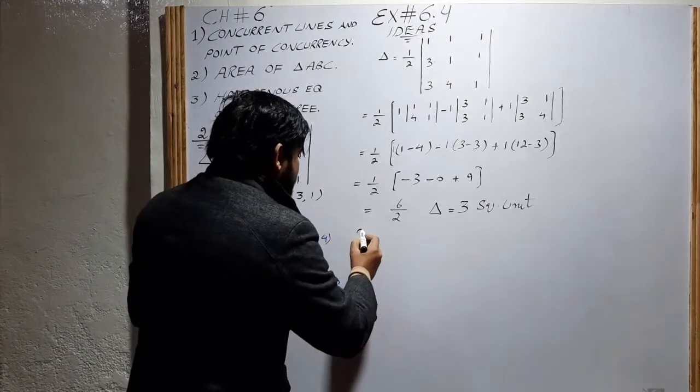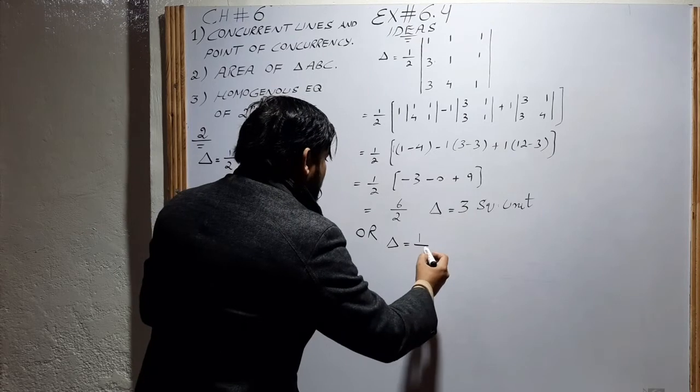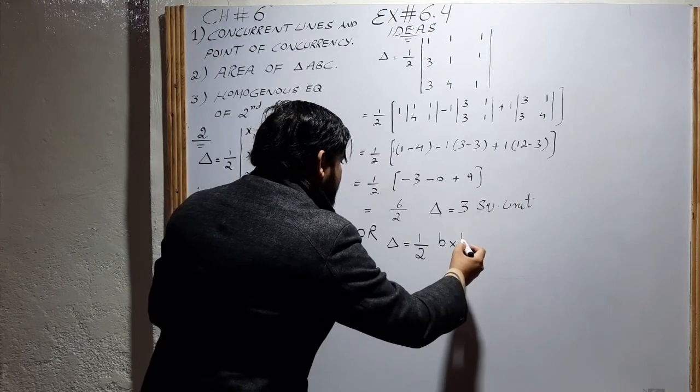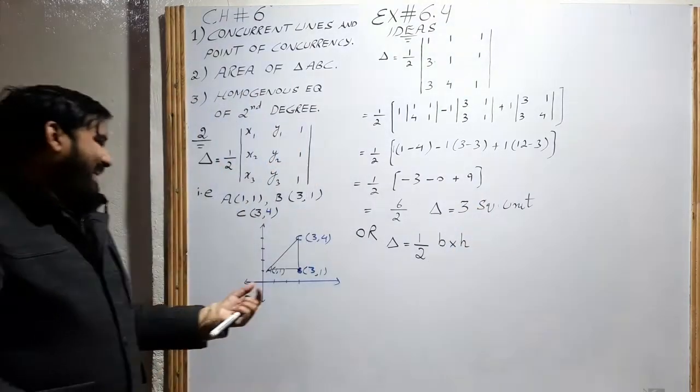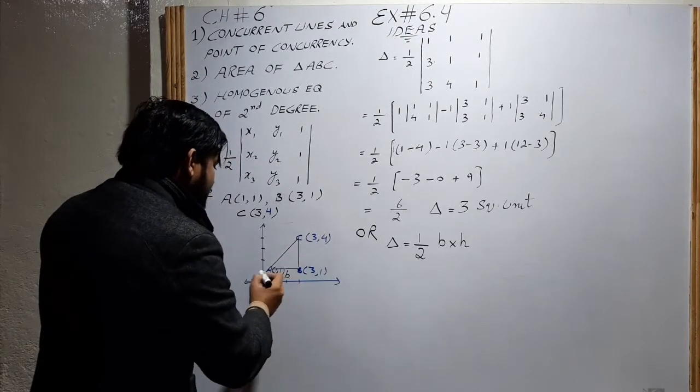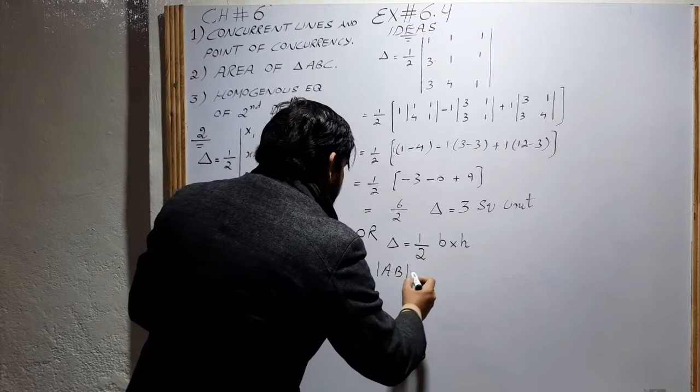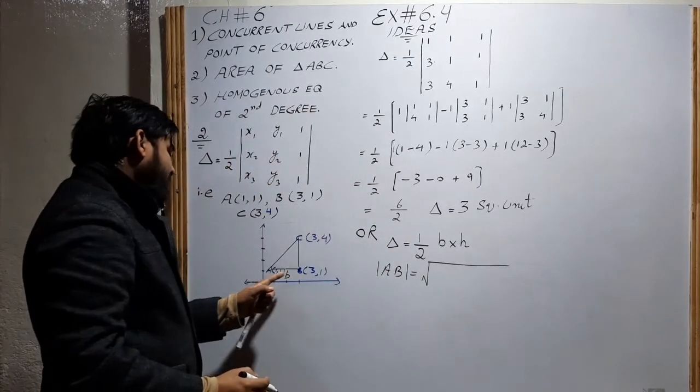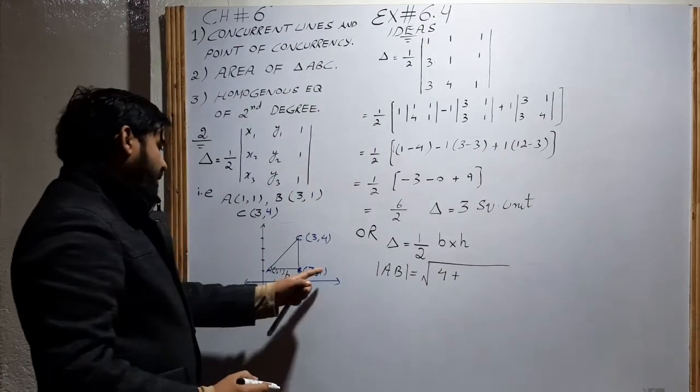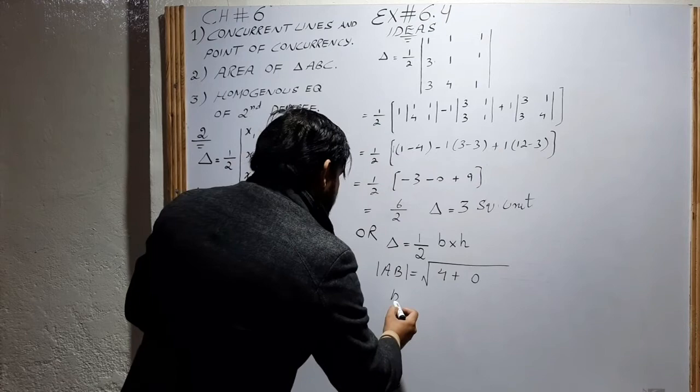In this case, the area of this triangle is three square units and it is a right angle triangle. We can also find the area by using another formula: area of triangle in case of right angle is half the base multiply by height. We can easily find base by using the distance formula. This is base B, the length of AB. Using distance formula: 3 minus 1 is 2, so the base value is 2.